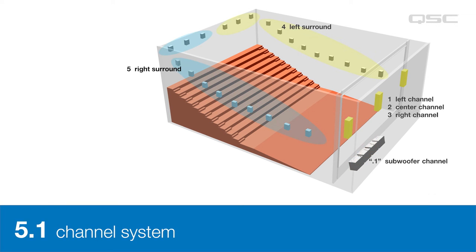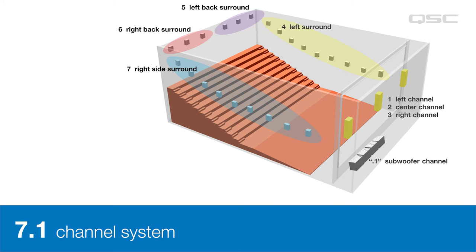The most basic sound format is 5.1. In this format, there are three full-range screen channel loudspeakers behind the screen. Two more channels are dedicated to left and right sound arrays for creating a sense of ambience related to the visual scene on screen or for special sound effects. Then the .1 channel is a dedicated band-limited subwoofer channel. A 7.1 system divides the left and right sound arrays into left-side, left-back wall, and right-side, right-back wall loudspeakers, enabling a greater sense of movement.